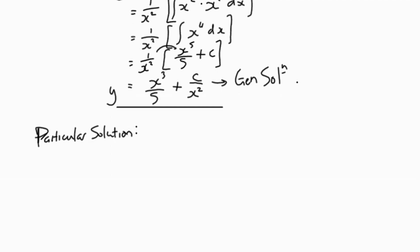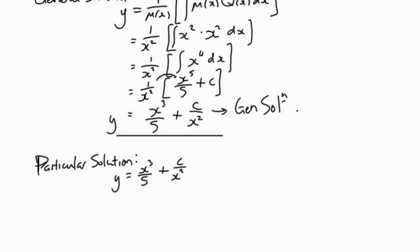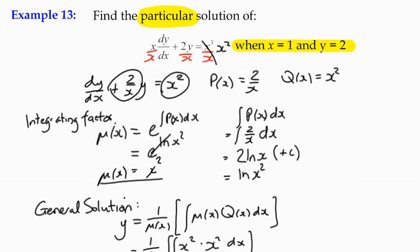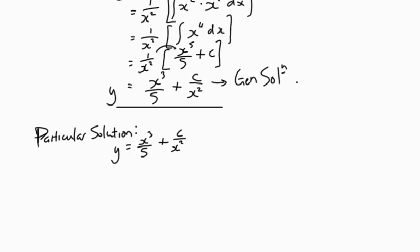Particular solution. It simply means that we're going to use our function y = x³/5 + c/x², but we're going to remember that we were given information at the top which says x=1 and y=2. What we need to do is substitute in those values to our equation: 2 = 1³/5 + c/1².